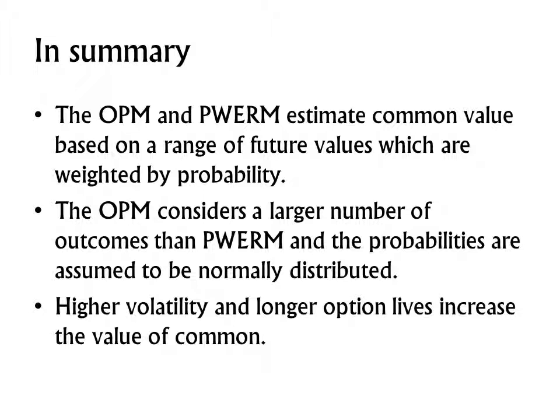In summary, the OPM and the PWRM estimate common value based on a range of future values which are weighted by probability. The OPM considers a larger number of outcomes than the probability weighted method, and the probabilities are assumed to be normally distributed. Higher volatility and longer option lives increase the value of the common.